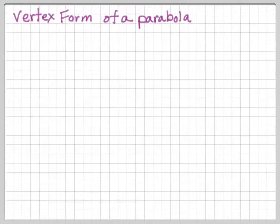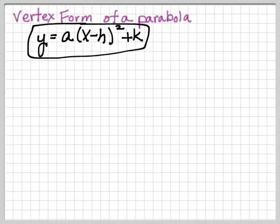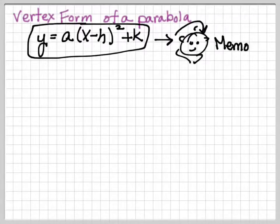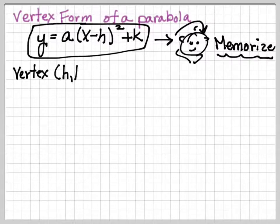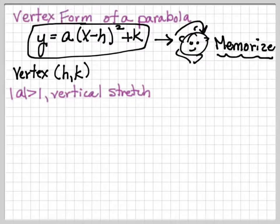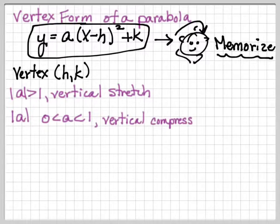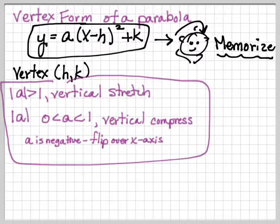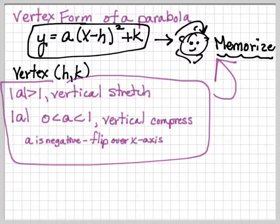This is called the vertex form of a parabola: y = a(x - h)² + k. You need to memorize this. The vertex is (h, k) — h goes opposite of what you'd think, and k is the same. The number out in front, a: if the absolute value of a is greater than 1, it's a vertical stretch; if it's a fraction between 0 and 1, it's a vertical compression; and if a is negative, the graph flips over the x-axis. This works the same as any parent function transformation.